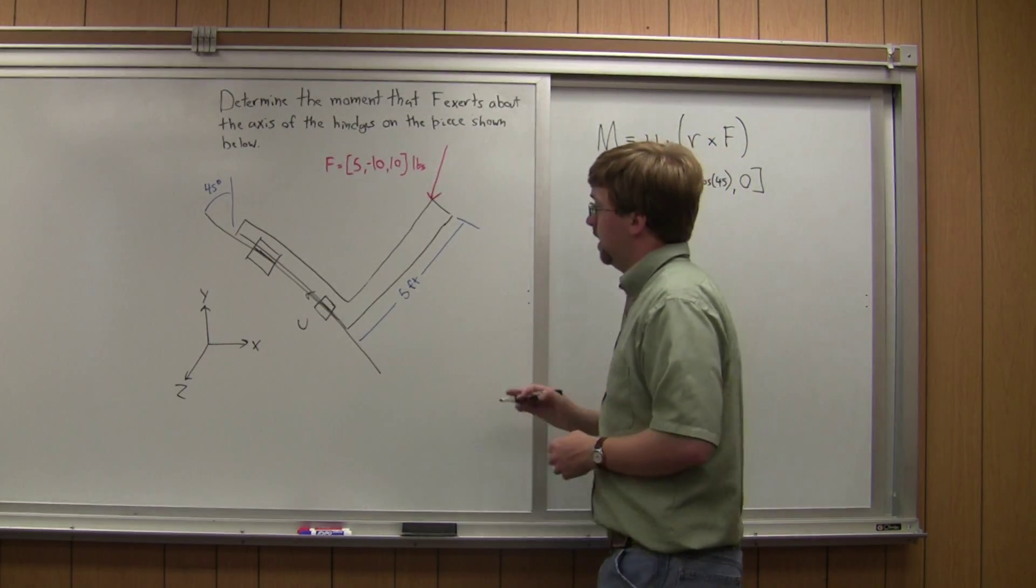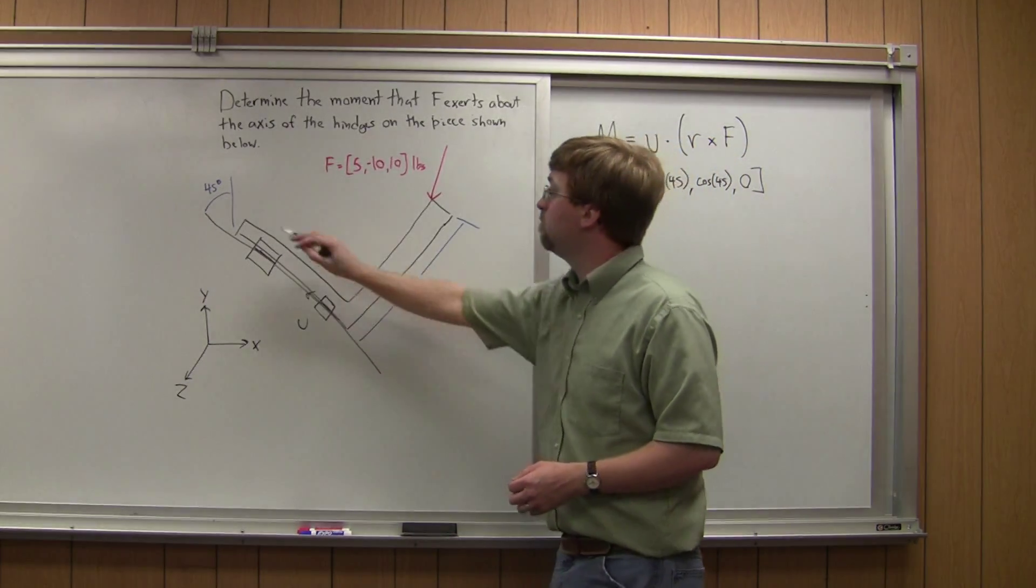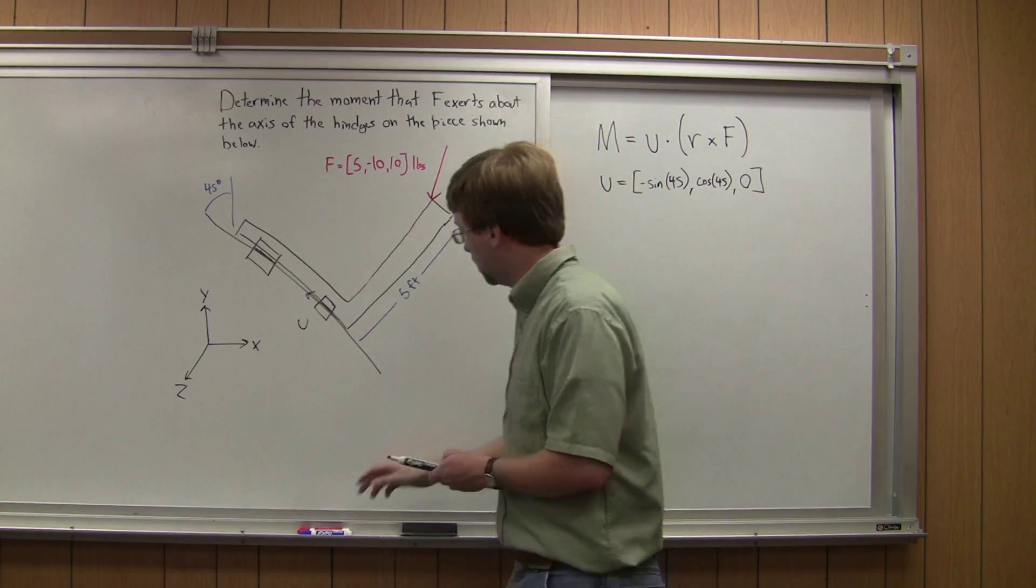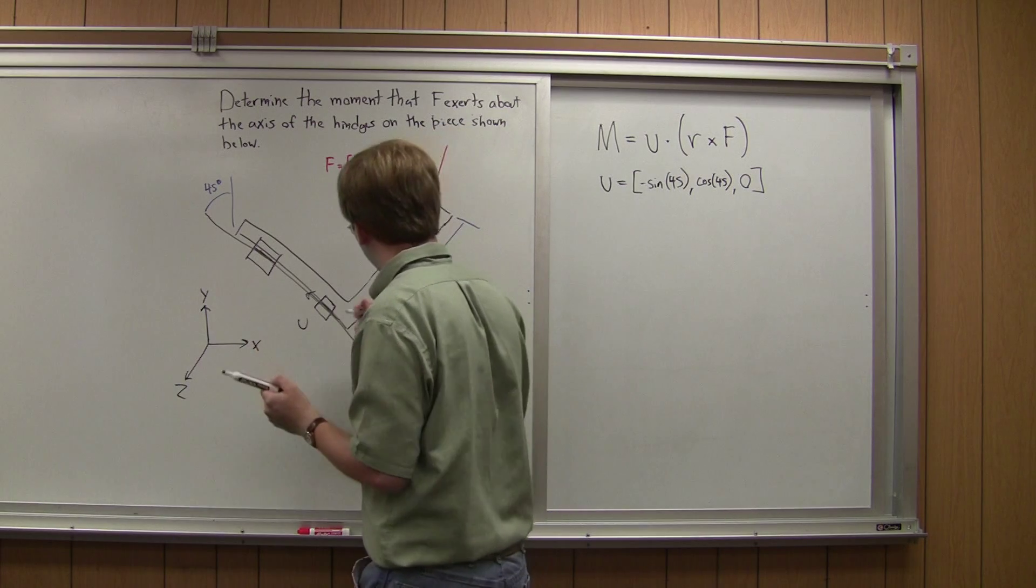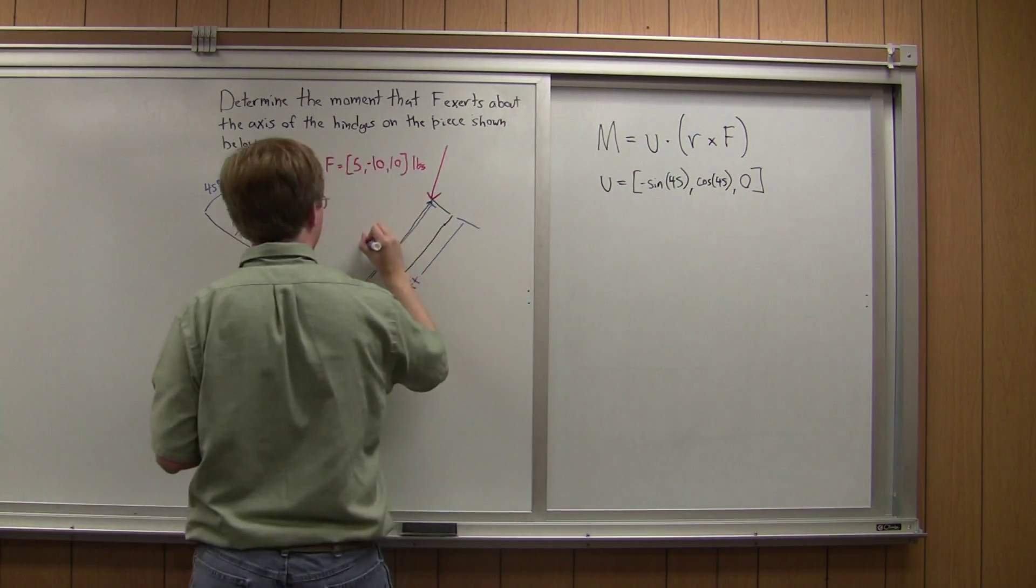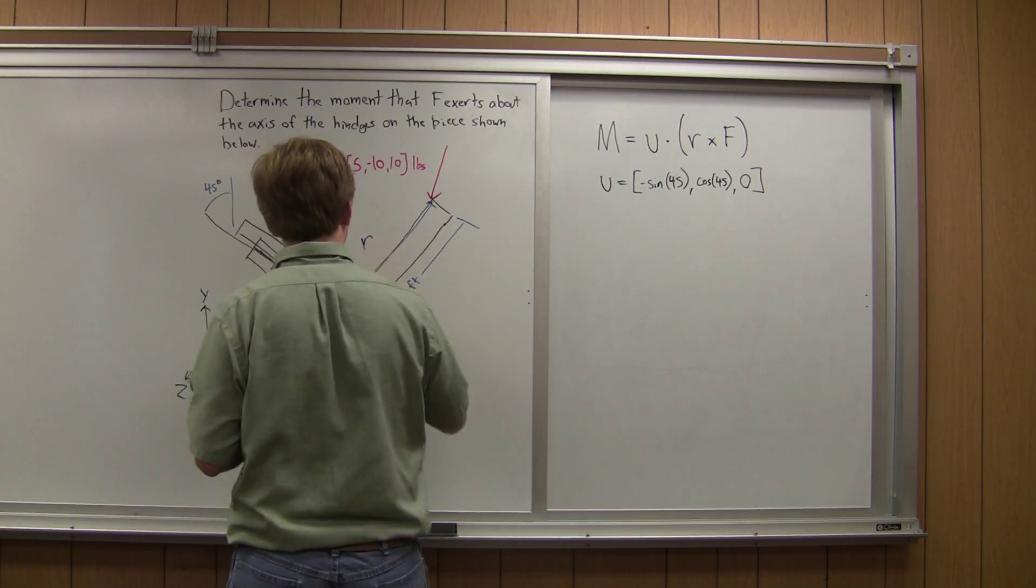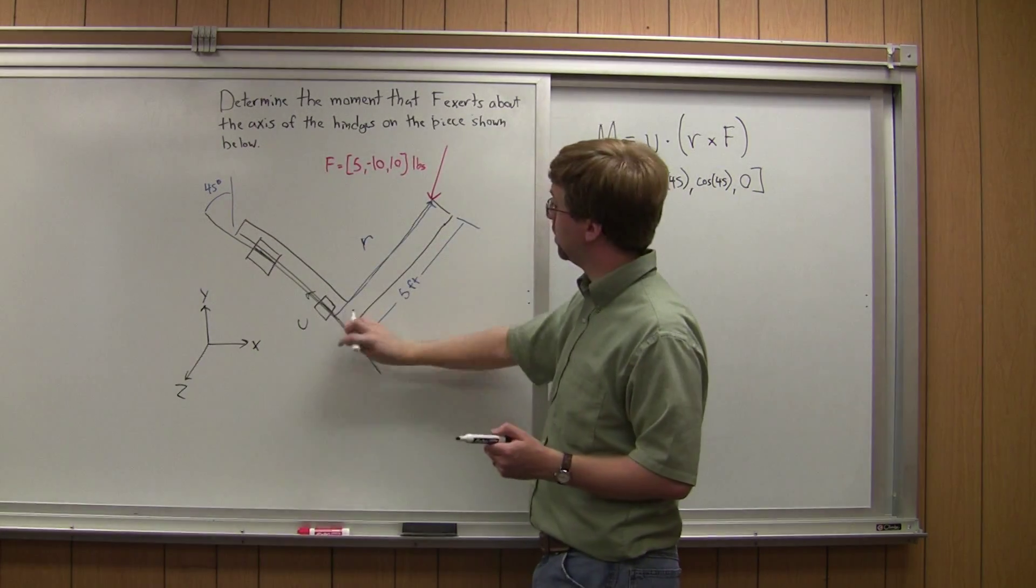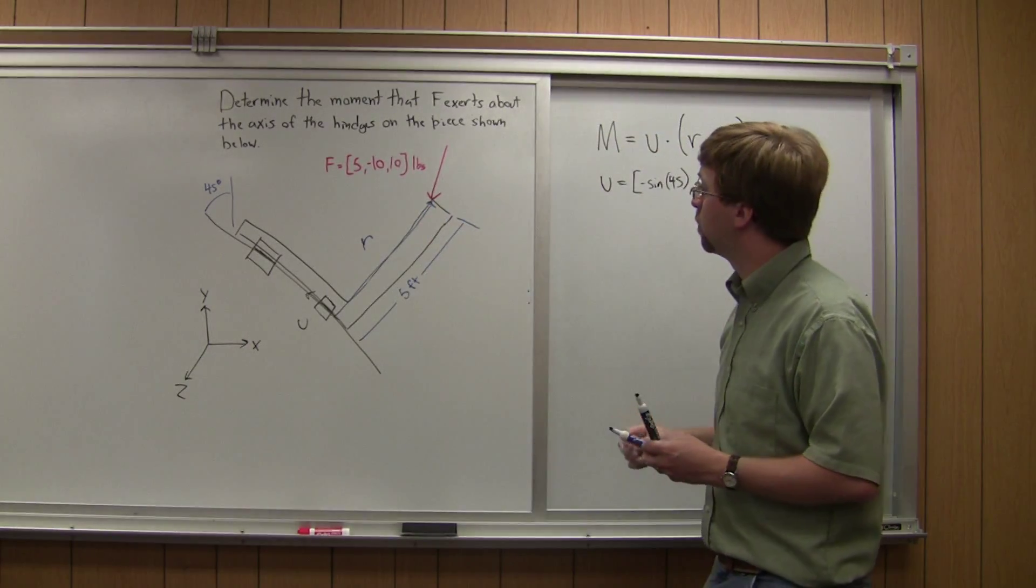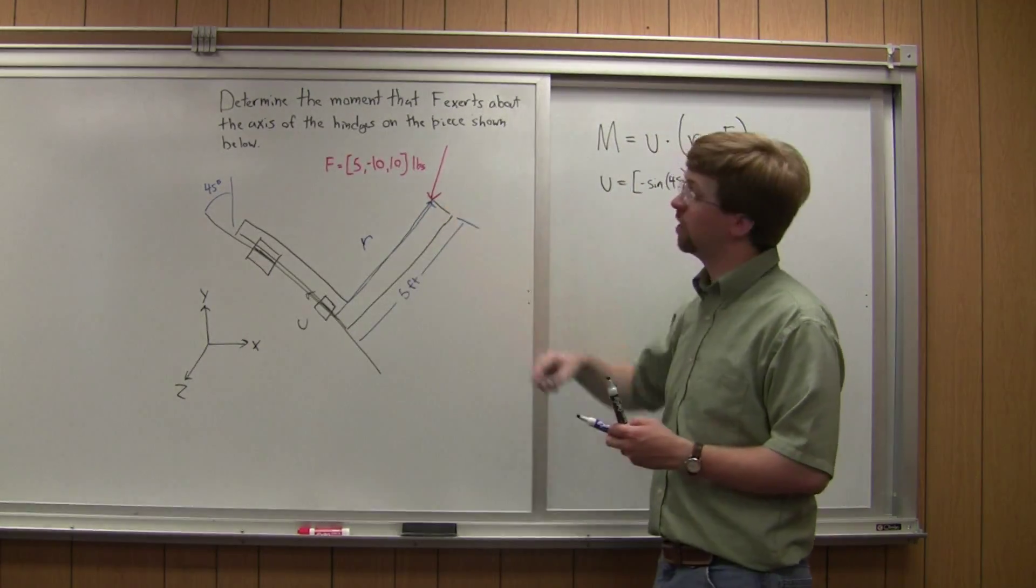R is a vector going from any point on this axis out to the point of application of the force. So in this case I'm going to show my R vector like so. So it's going from this axis and it's going out at a 45 degree angle to the point where the force is applied and it goes a total distance of 5 feet.